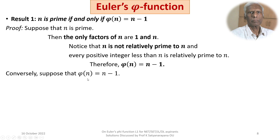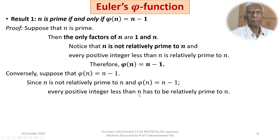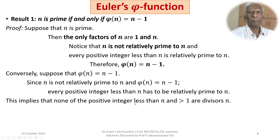Conversely, suppose phi(n) = n − 1. Since n is not relatively prime to n, and phi(n) = n − 1, every positive integer less than n must be relatively prime to n. This implies none of the positive integers between 1 and n (exclusive) divide n. Thus n is a prime number. Hence, n is prime if and only if phi(n) = n − 1.